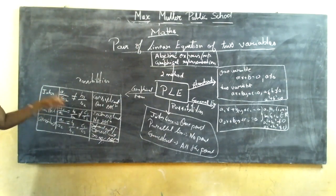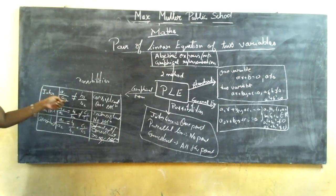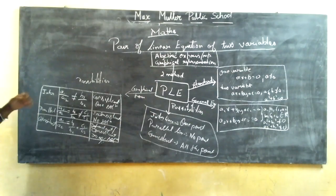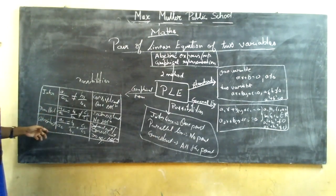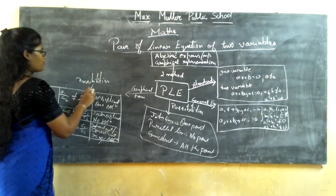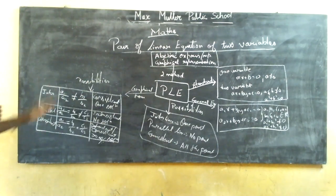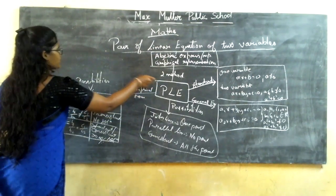A helpful analogy: intersecting lines are like partial friends — you smile when you see them but only meet when you need something, so you have one point of contact. Parallel lines are like enemies — you won't talk at all, so no solution. Coincident lines are best friends — whatever problem you have, you solve it together, so infinite solutions.